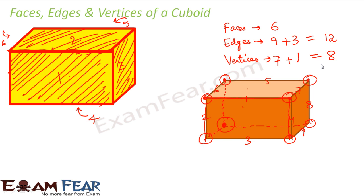When we look at a cuboid, we see that there are 6 faces, 12 edges and 8 vertices. The number of faces, edges and vertices changes with different three dimensional shapes.